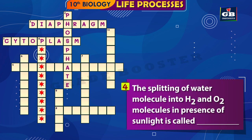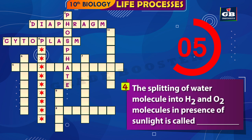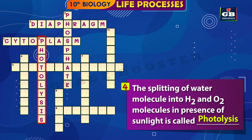4 Down: The splitting of a water molecule into H2 and O2 molecules in the presence of sunlight is called dash. The answer is photolysis. The splitting of a water molecule into H2 and O2 molecules in the presence of sunlight is called photolysis.